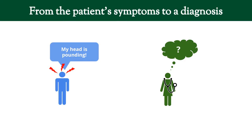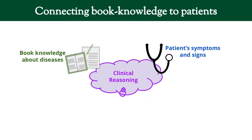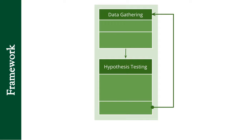What clinical reasoning does is it takes you from a patient's symptoms — in this case this guy's head is pounding — to a diagnosis and possibly even a treatment. Clinical reasoning is the connection between the book knowledge that we have about diseases as well as the knowledge that we collect from our patients. It allows us to take both of those things and synthesize them into a diagnosis and treatment.